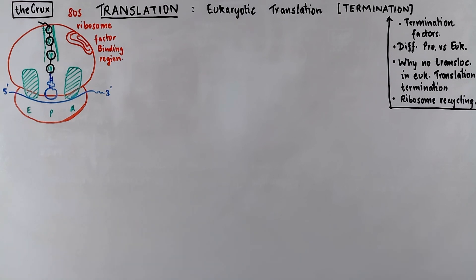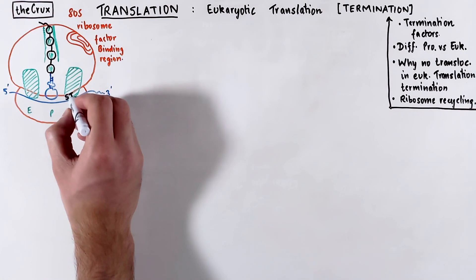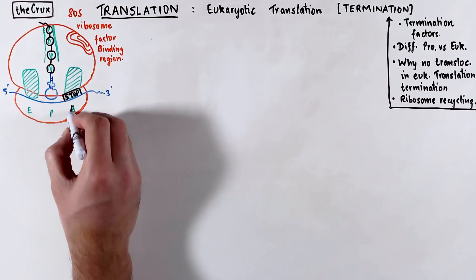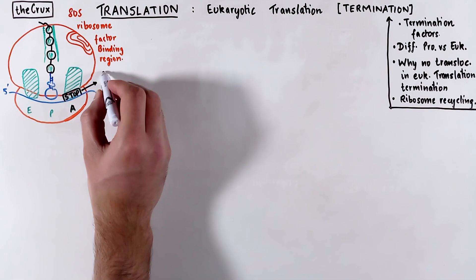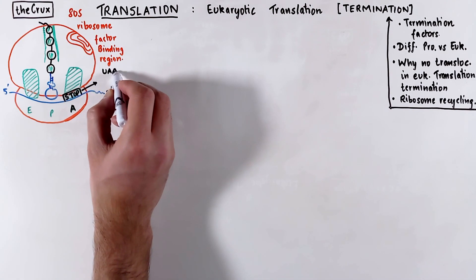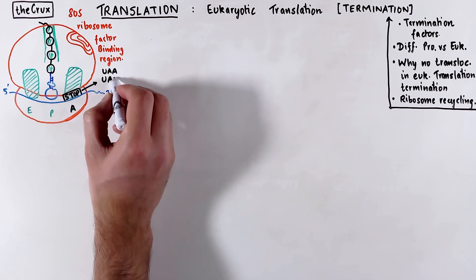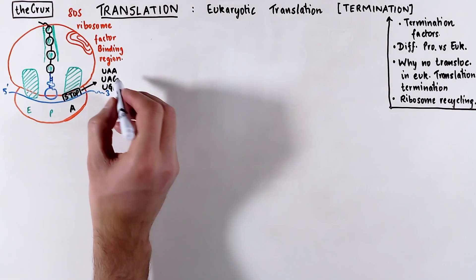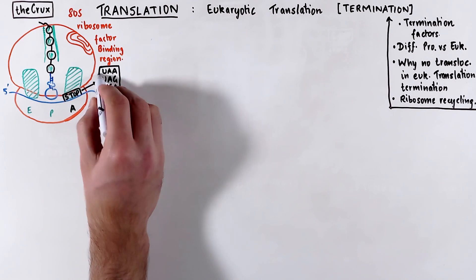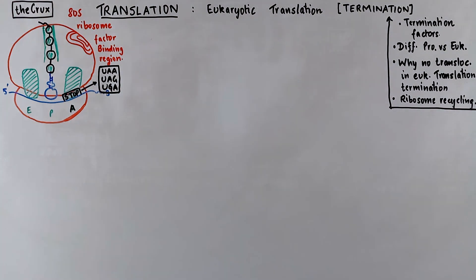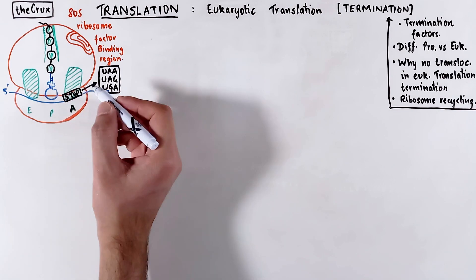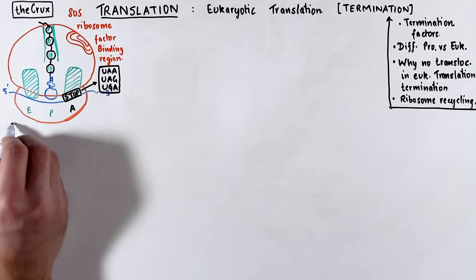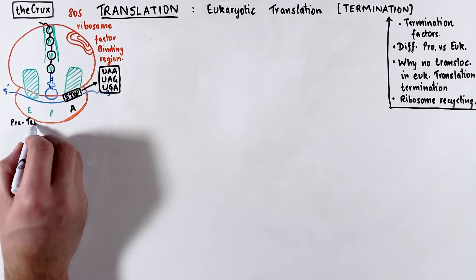Termination starts when a stop codon is encountered at the A site. There are three stop codons: UAA, UAG, and UGA. This ADS ribosome complex where the stop codon is sitting at the A site is called the pre-termination complex.